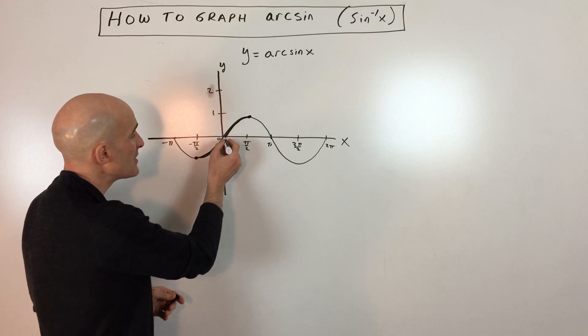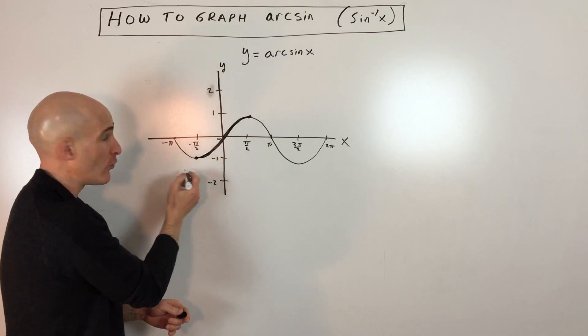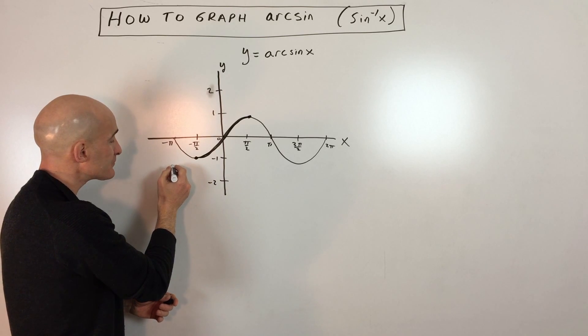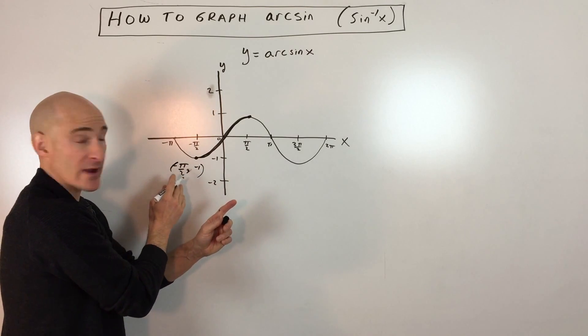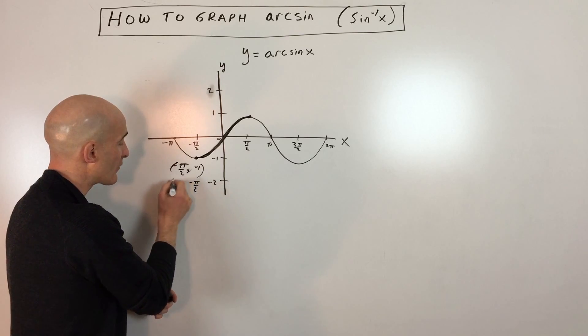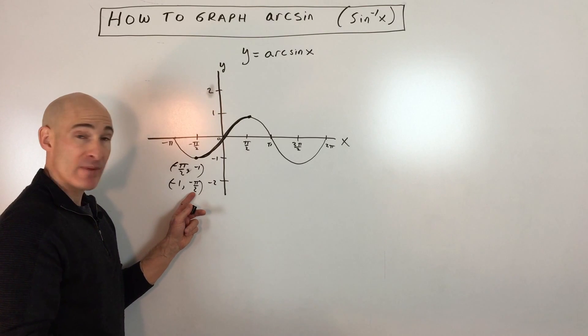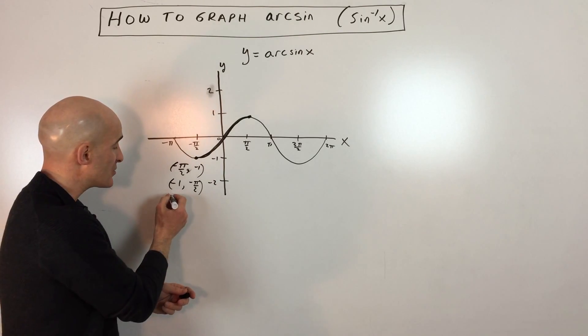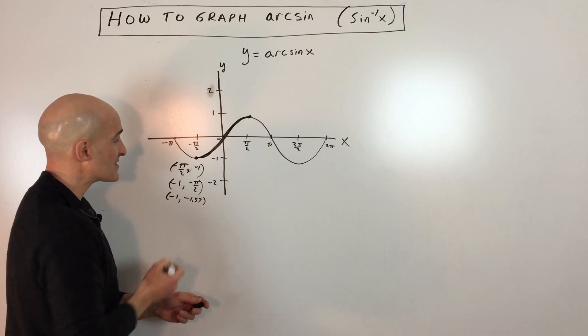Let's look at three key points. Let's look at this point here, negative π over 2 comma negative 1. What we're going to do is write this out, but I'm going to switch the x and the y coordinates. If we do that, this is going to be negative 1, negative π over 2. Now remember π is 3.14 approximately, divided by 2 is about 1.57. So this point is really going to be negative 1, negative 1.57.